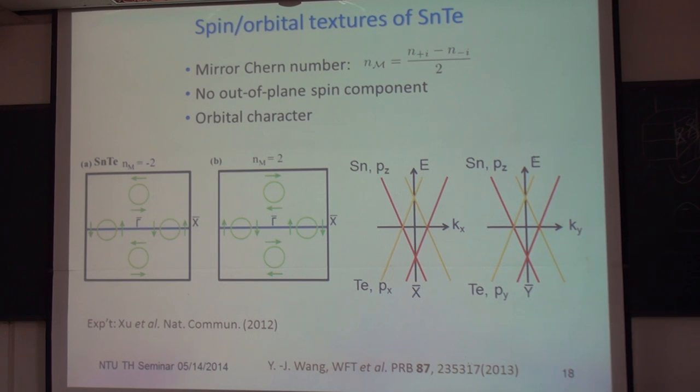But if you simply break one mirror plane, the consequence is just you break a pair of Dirac cones. You open the gap, exactly. But if the other direction mirror symmetry is preserved, then it's okay. But if you break all mirror symmetries, should I still call it topological phase or not? But I think this is still not well studied.